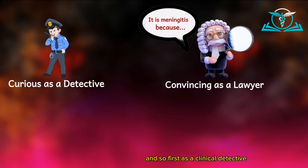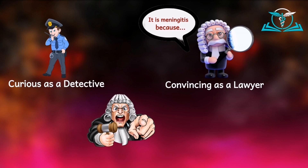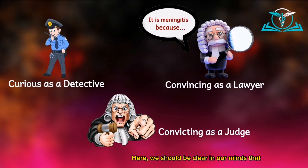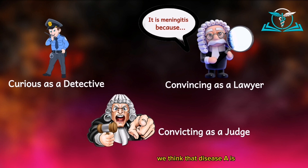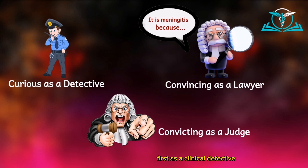First as a clinical detective, and then as a lawyer. The third profession within the medical profession is that we are judges. We should be convicting as a judge. We should be clear in our minds that after being curious and after being convincing, we conclude that disease A is the disease causing the patient's problems — and that is how we make the diagnosis. In summary, our profession has three ramifications: one profession with three branches — first as a clinical detective, then as a clinical lawyer, and then as a clinical judge.